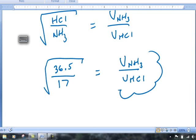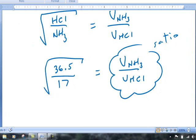Using our experimental data, we then find our ratio of the ammonia to the HCl and compare it to this to see how well Graham's Law works for us.